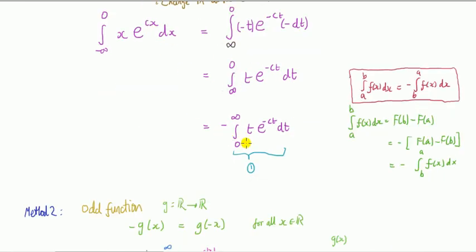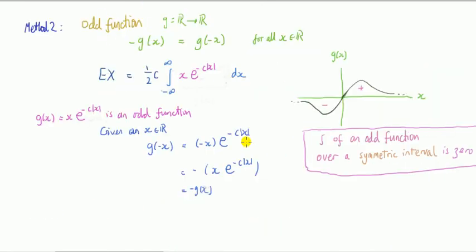Method two is a quicker way because we just use the fact that we've got a function here called an odd function. So let's say a function g—its domain is R, maps onto R—then it's, we say the function is odd if this condition is satisfied. It's best to explain it using some graph here.